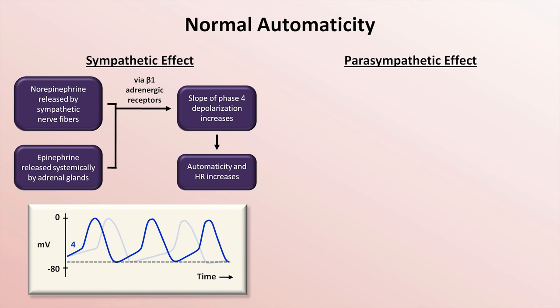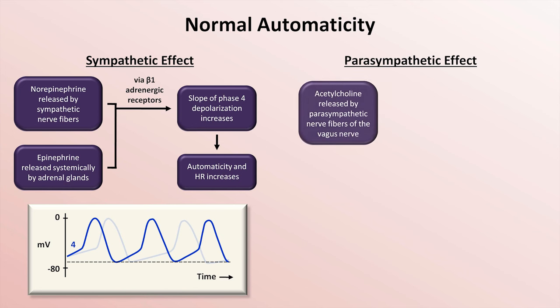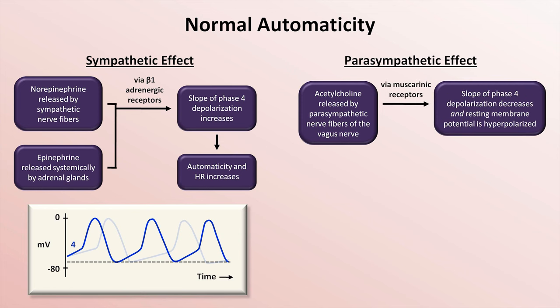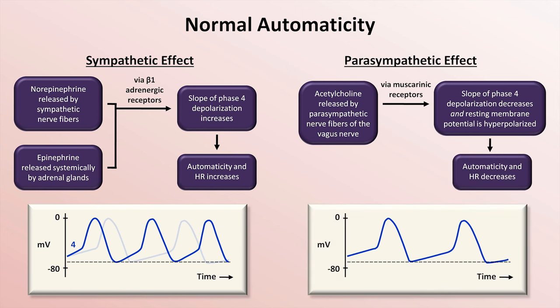In the parasympathetic nervous system, acetylcholine released by parasympathetic fibers traveling through the vagus nerve activates muscarinic receptors on the pacemaker myocytes. This decreases the slope of phase IV and hyperpolarizes the resting membrane potential. The consequence is a decrease in automaticity and thus heart rate. Here are the normal action potentials again with a more gradual phase IV slope combined with hyperpolarization.